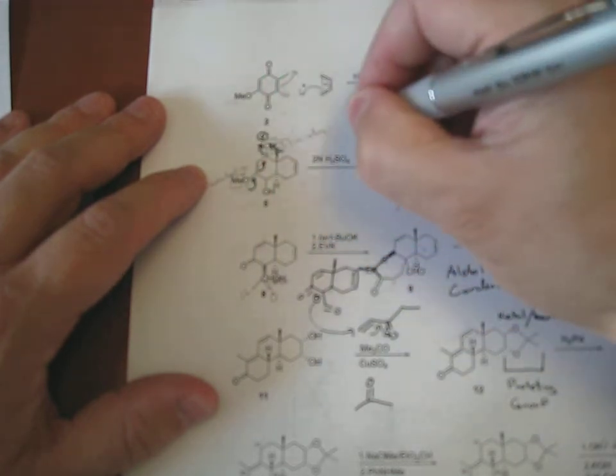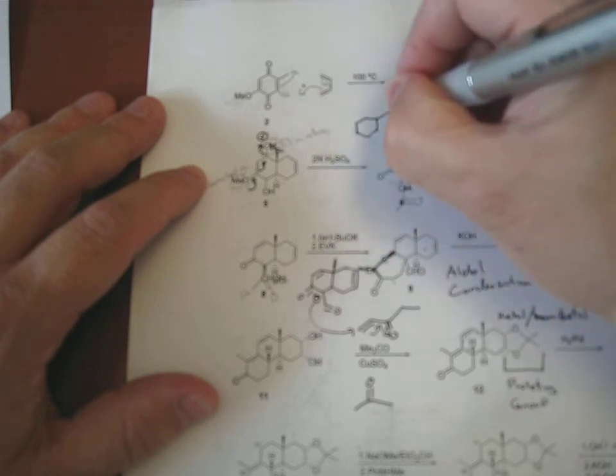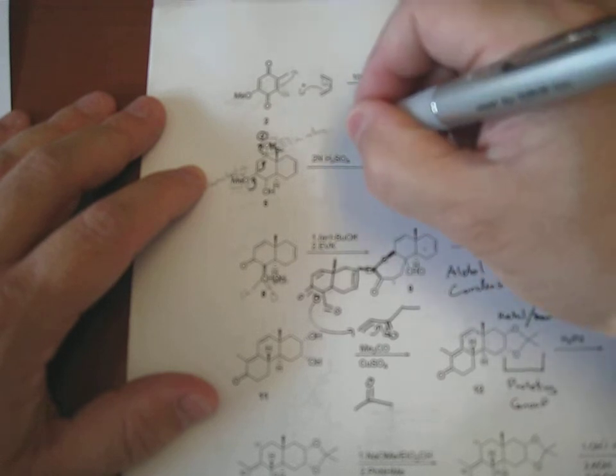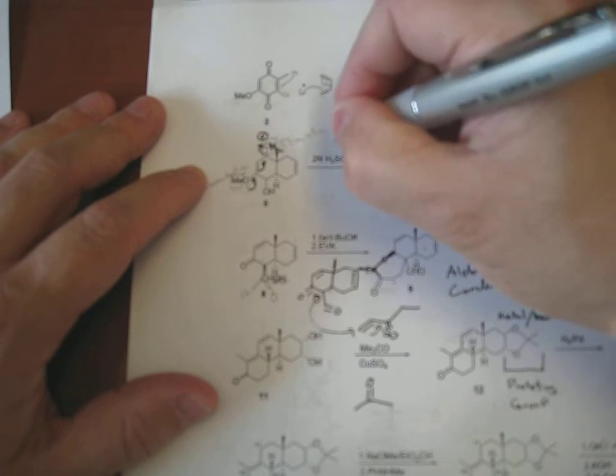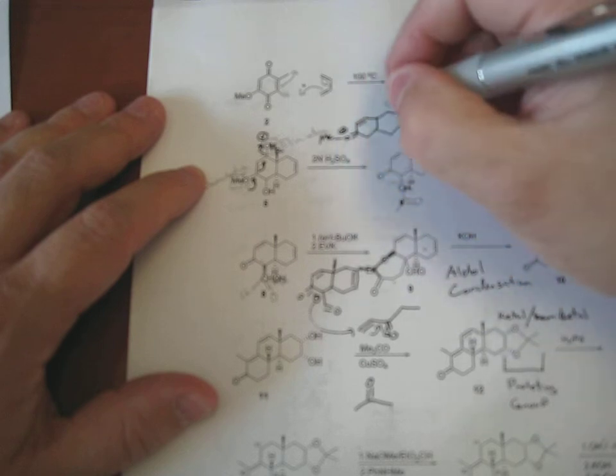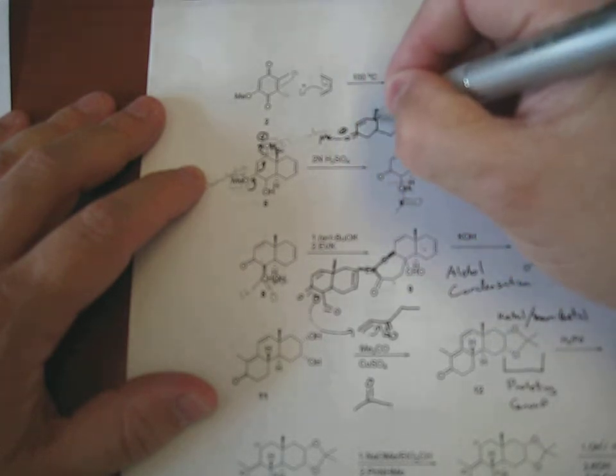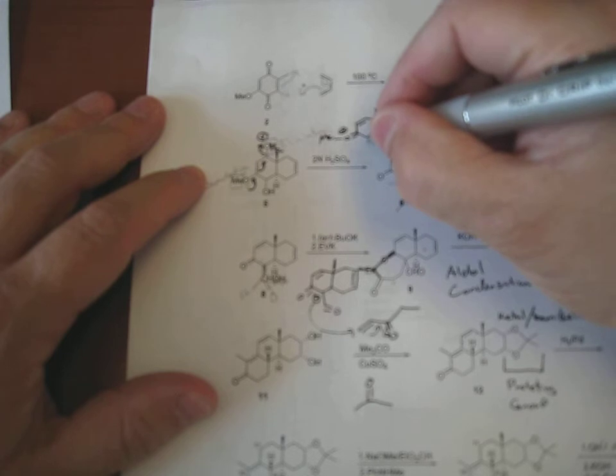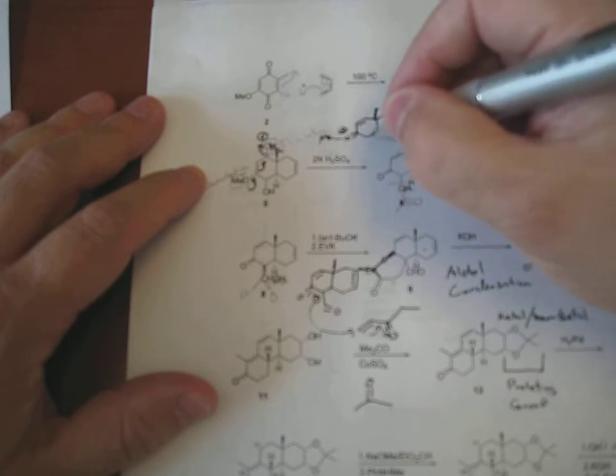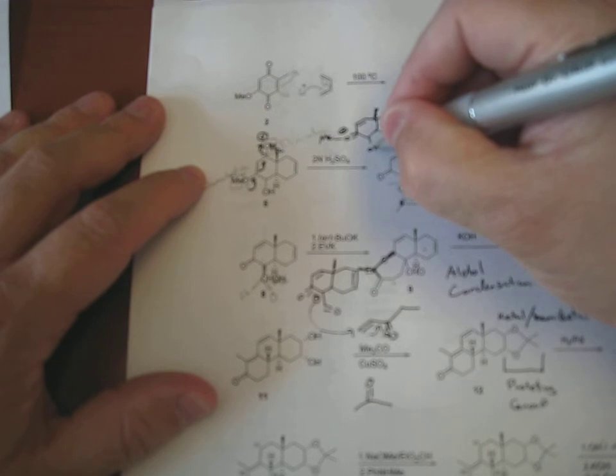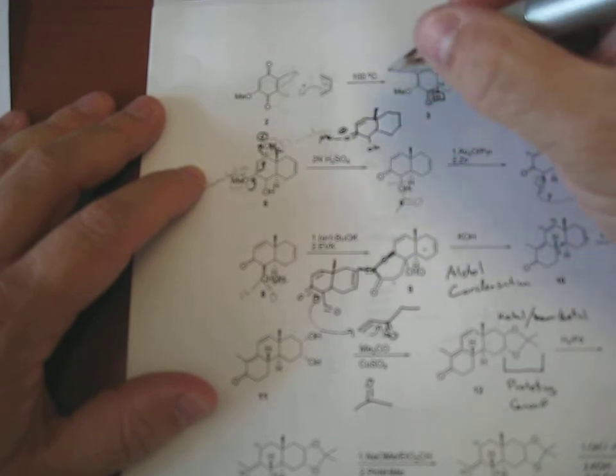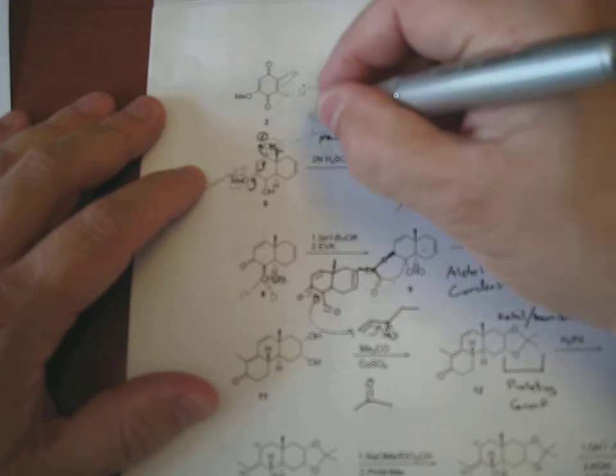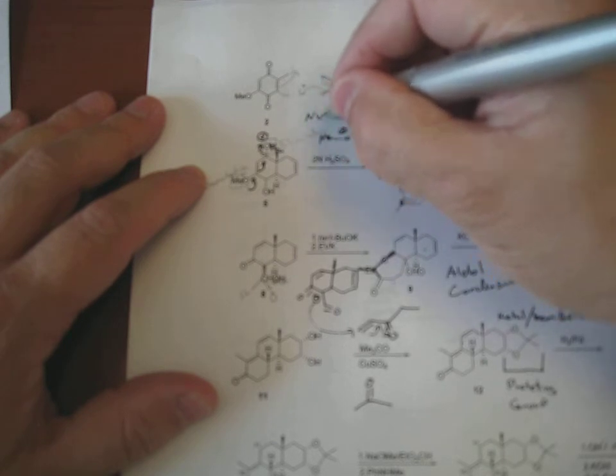So then you'll get something else like this, and then you have some sort of weak nucleophile. It's going to come in and take that away. It's going to be like water or something.